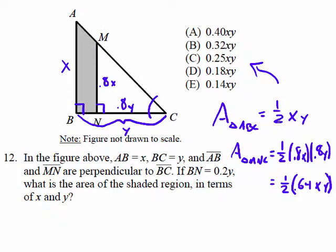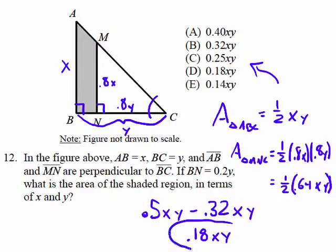So for the area of the shaded region, we have ½XY minus ½ of 0.64XY. Let's put this all in decimal: this is going to be 0.5XY minus 0.5 times 0.64, which is 0.32XY. So 0.5 minus 0.32 is 0.18XY. That is the area of the shaded region.